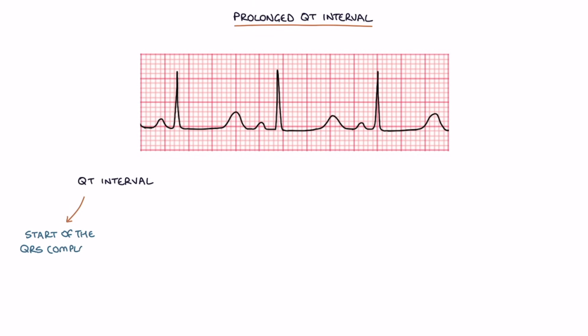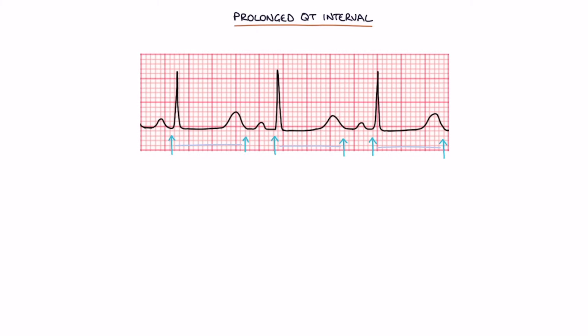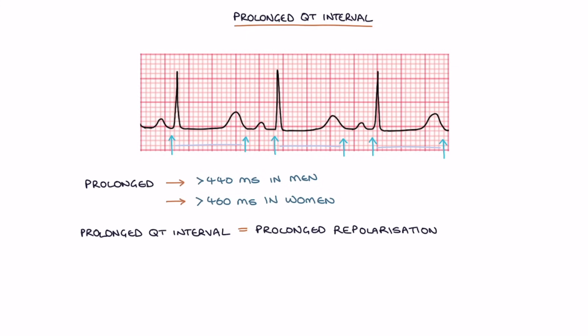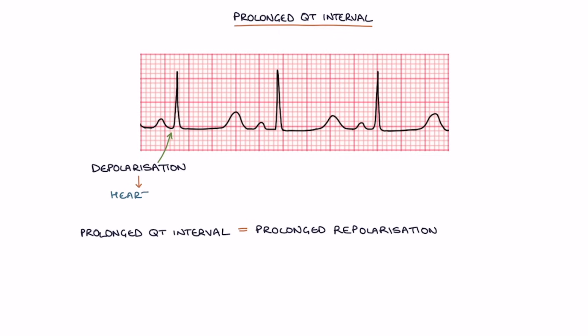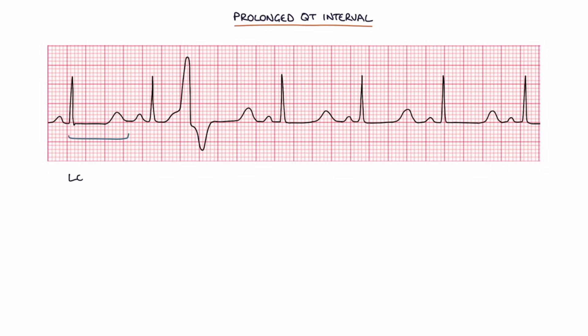The QT interval runs from the start of the QRS complex to the end of the T wave. The corrected QT interval, or QTc, estimates the QT interval if the heart rate were 60 beats per minute, and is prolonged at more than 440 milliseconds in men or 460 milliseconds in women. A prolonged QT interval represents prolonged repolarization of the myocytes after a contraction. Waiting a long time for repolarization can result in spontaneous depolarization in some muscle cells.